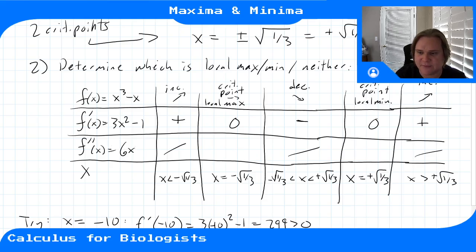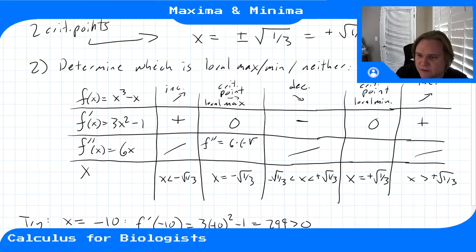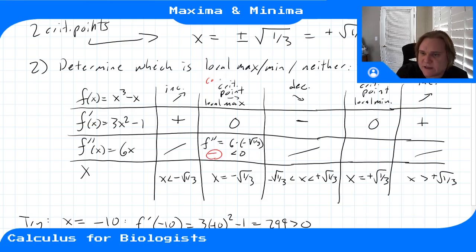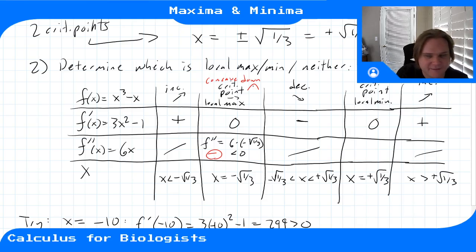At x = -√(1/3): f'' = 6(-√(1/3)), which is negative. In red on the table: a negative second derivative means the function is concave down—which looks like a maximum.